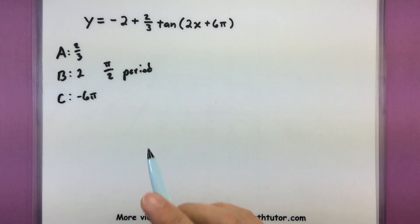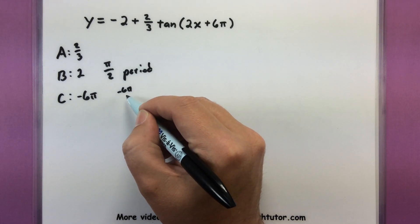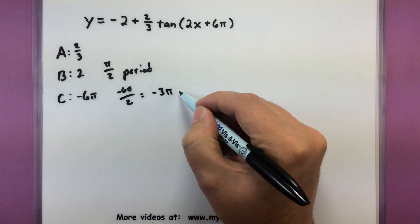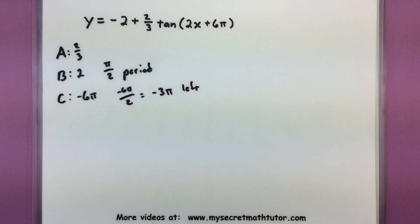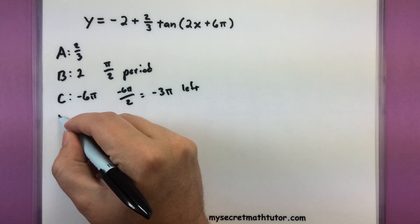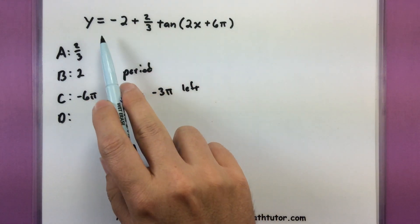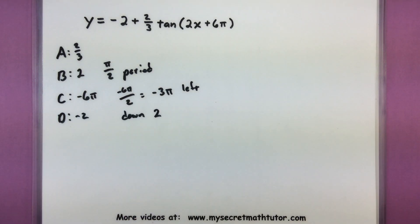For our phase shift, we take the value of c and divide it by b, giving us negative 3 pi phase shift — or shifted to the left by 3 pi. And d: how far up and down are we going? These are things added or subtracted on the outside. I have a negative 2, so we are going down 2. That's a lot of good information, so now let's get into graphing it.